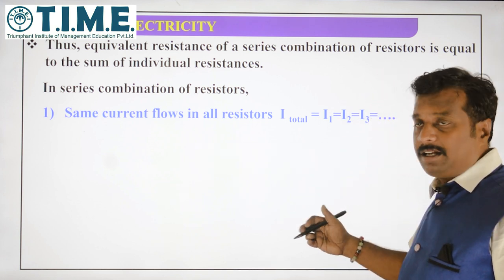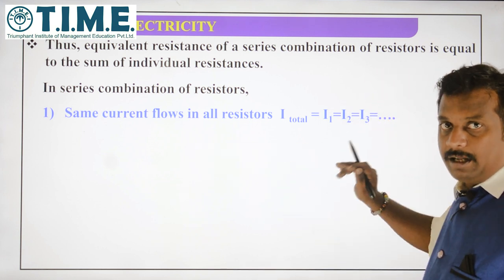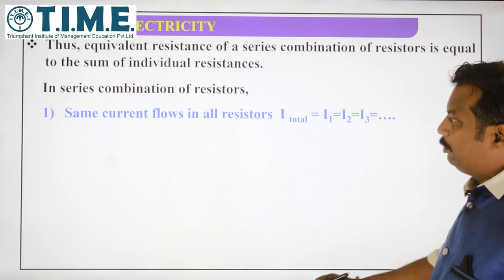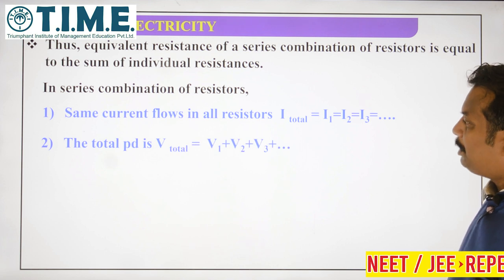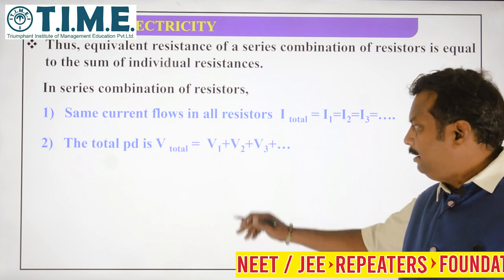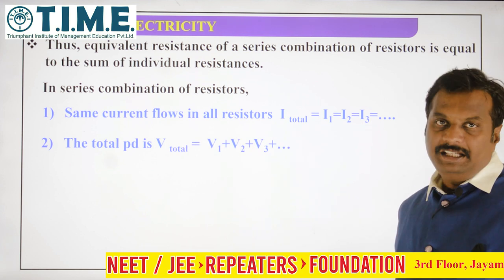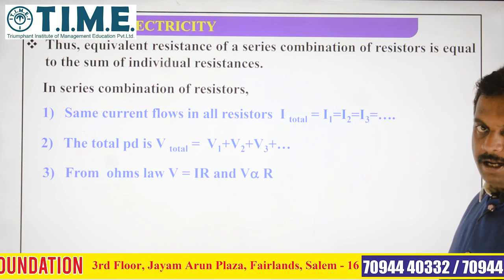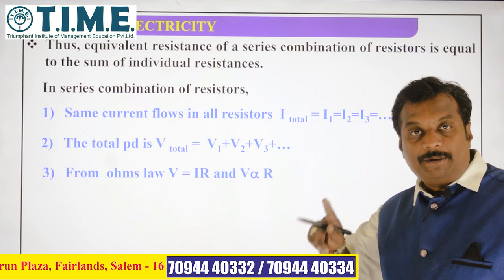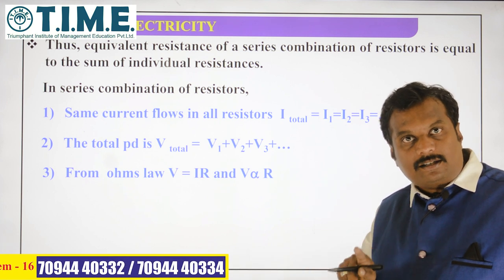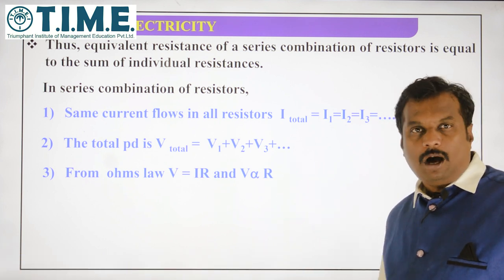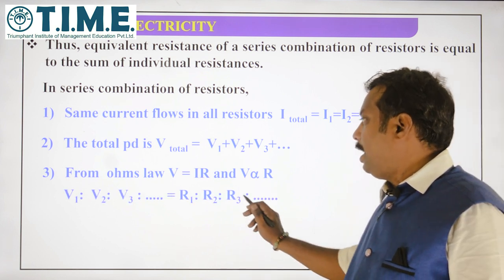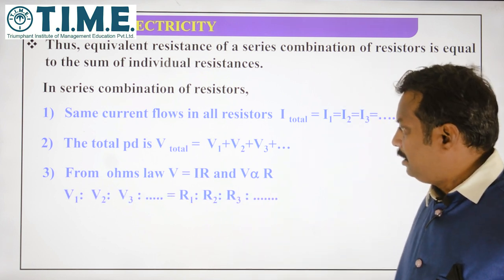The same current flows through all the resistors: I total = I1 = I2 = I3. The total potential difference equals V1 + V2 + V3. By Ohm's law, since the current remains constant in series combination, voltage V is directly proportional to R. Therefore, V1 : V2 : V3 = R1 : R2 : R3.